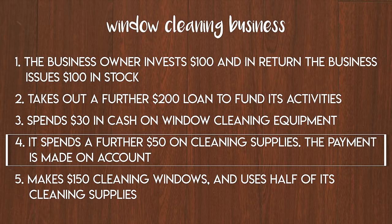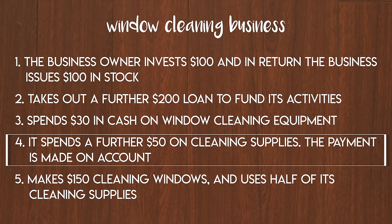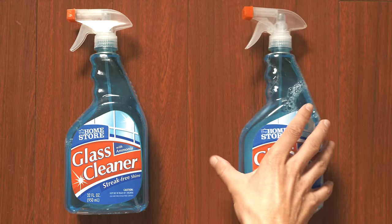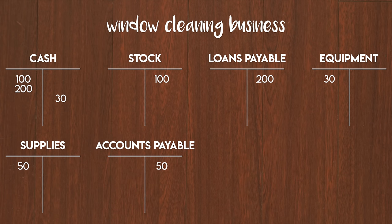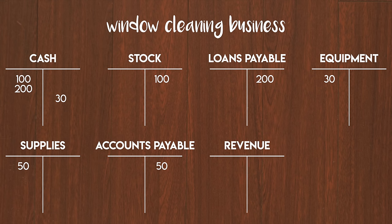Is your head hurting yet? We only have one transaction to go so it'll all be over soon. In our last transaction the business gets its first client and makes $150 cleaning their windows, using half of its supplies in the process. This one is a bit more tricky because there are two sides to it, but don't worry we'll work through it together. First we need to recognize our revenue. We made $150 cleaning the client's windows so revenue needs to go up by $150 and so does our cash. Revenue is the R in DEALER so credits increase it. We make a new revenue T-account and credit it by $150 on the right-hand side. The cash we made is recorded as a $150 debit to the left-hand side of the cash T-account.